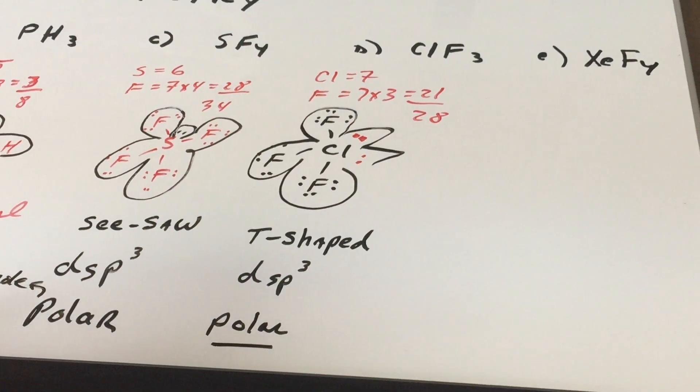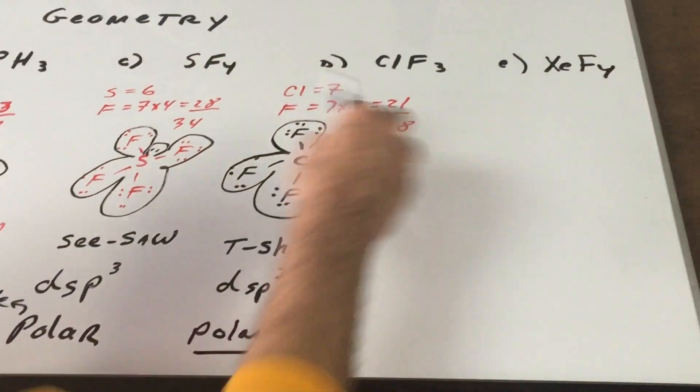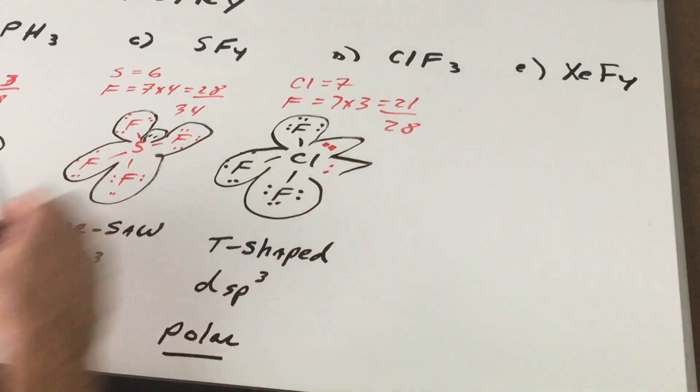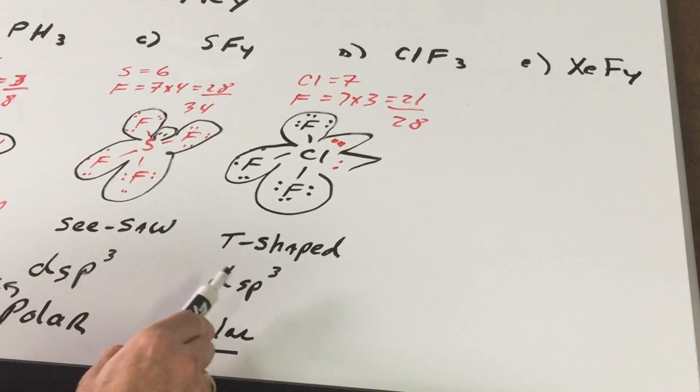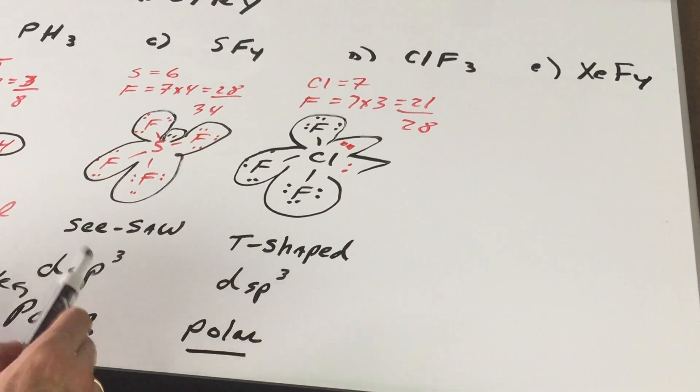So these are the type of questions that DAT likes to ask. How many valence electrons? What's the molecular geometry? What does the Lewis structure look like? What is the hybridization? And does it have a dipole?